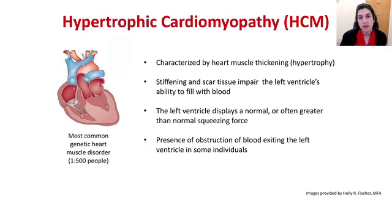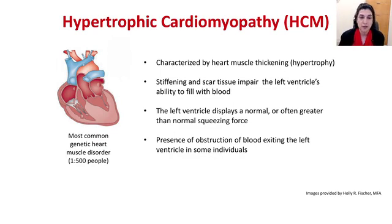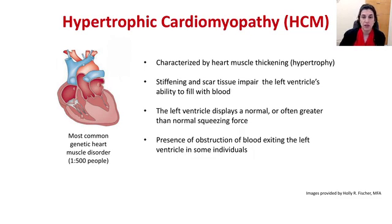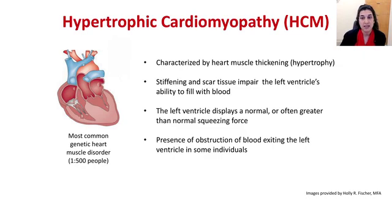Hypertrophic cardiomyopathy is characterized by heart muscle thickening or hypertrophy. That thickening results in stiffening and scar tissue formation that hinders the left ventricle's ability to relax or fill with blood. The left ventricle displays a normal or greater than normal squeezing force, which can sometimes result in obstruction to blood flowing out. It is the most common genetic heart muscle disorder, occurring in about 1 in 500 people worldwide, with no discrimination based on ethnicity, race, or gender.